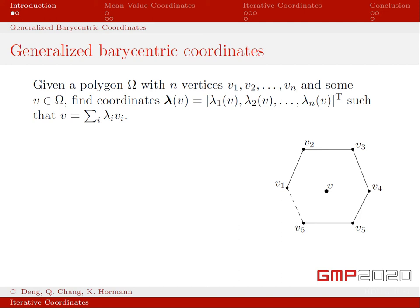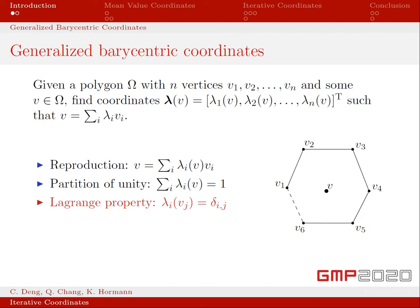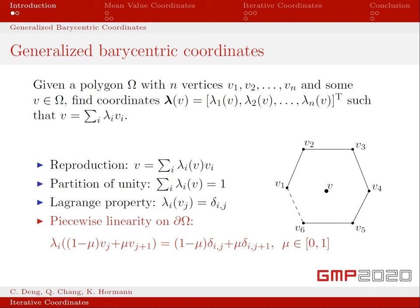Besides reproduction property, GBCs have many other properties, such as they sum to 1, they are 1 at the corresponding vertex and 0 at all others, and are linear on the boundary of the polygon.